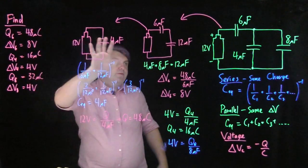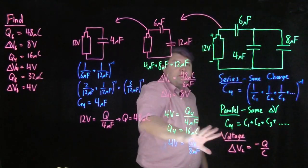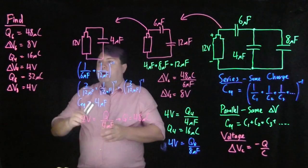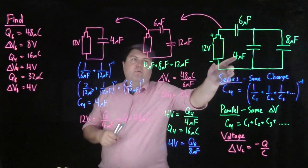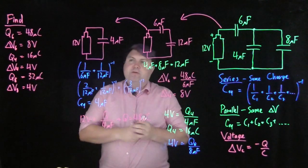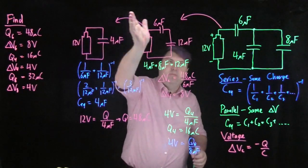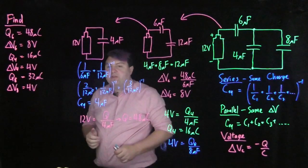So this is how we use our systems to find all of these different charges, all of these different voltage drops by building up to as simple of a circuit as possible and building back to the original circuit.